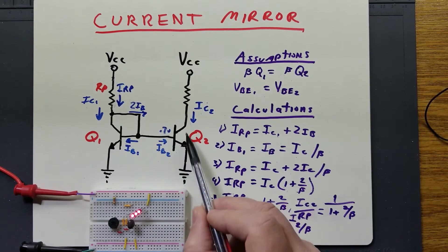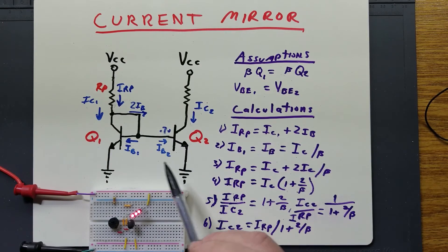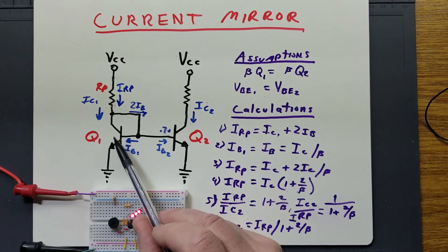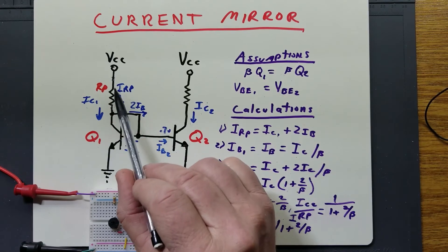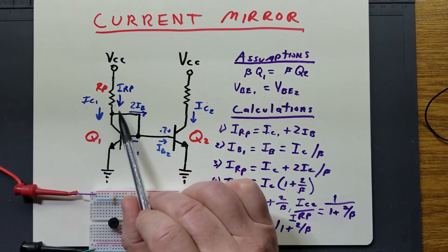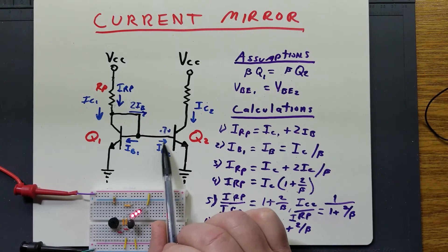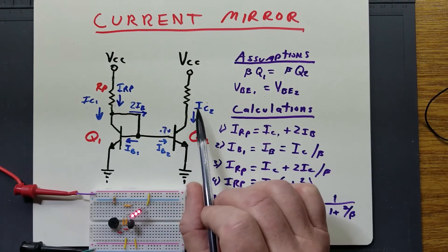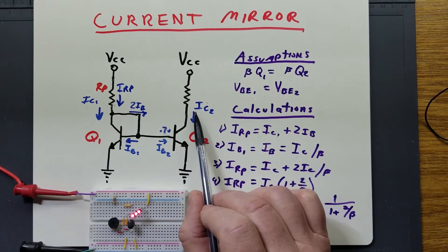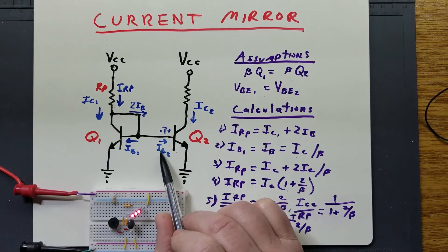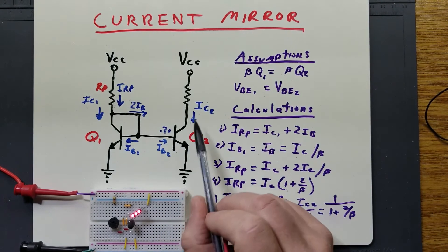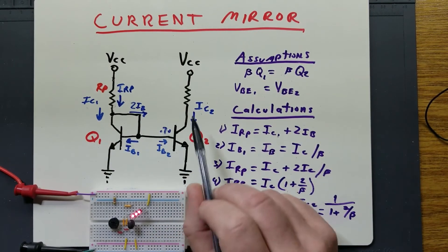This is also a constant current source, as mentioned before. The reason is that the base-to-emitter junction is maintained at 0.7 volts. If this stays at 0.7 volts, then this current will stay the same, this current here will stay the same, this current stays the same, and this current stays the same. If IB2 stays the same, then IC2 will stay the same, because this current is based on the base current multiplied by beta, maintaining that current level.